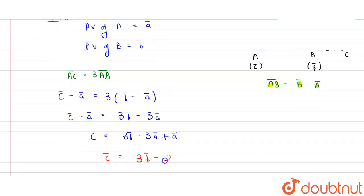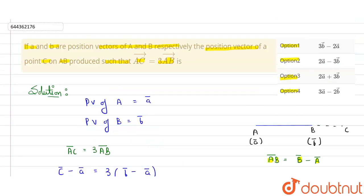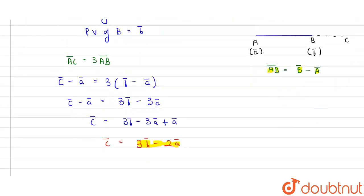So we were required to find this C vector, which is 3B vector minus 2A. Look in the options, option 3B minus 2A. This option one is matching with the answer 3B minus 2A, so option one is correct answer.